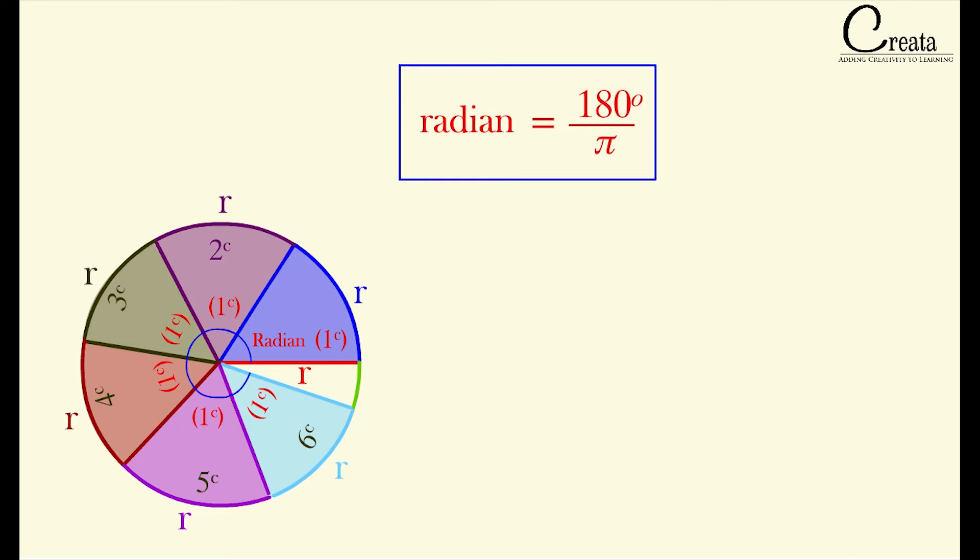On solving value of pi as 3.14, we get 1 radian is equal to 180 degree upon 3.14, that is 57.32 degree. So our fixed angle radian is 57.32 degree.